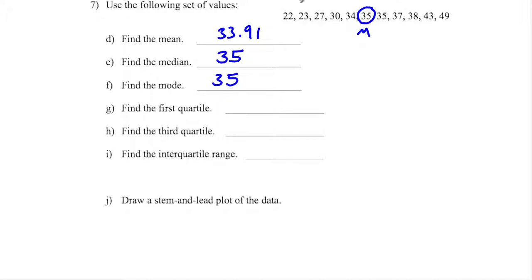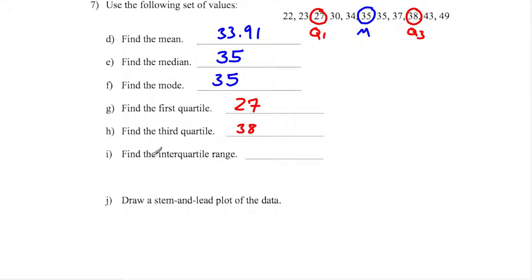The first quartile is going to be the median of the lower half. Given that there are five numbers in the lower half, the median is right there — and that's Q1, which is 27. The third quartile is the median of the upper half, which is 38. The interquartile range is just Q3 minus Q1, which is 38 minus 27, equaling 11.